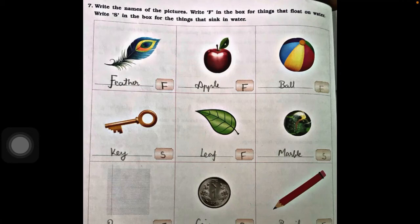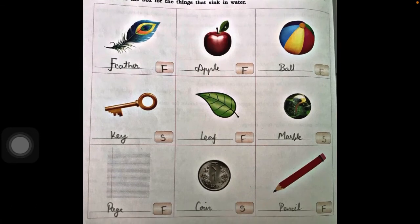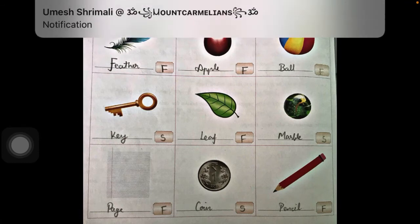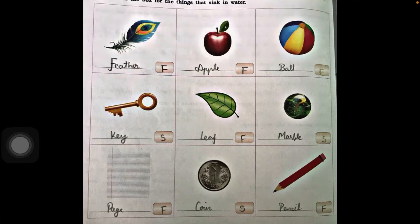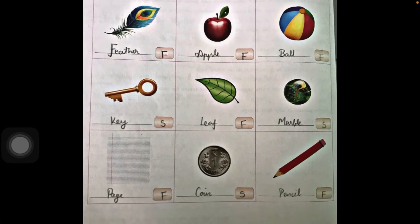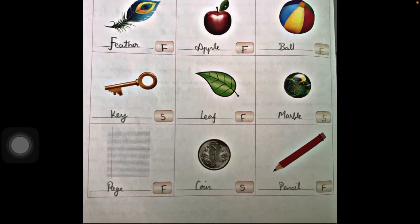Leaf floats on water, so F. Marble easily sinks in water, so we write S. Now vase — vase can easily float on water, so we write F. Coin easily sinks in water, so we write S. Finally, pencil can float on water, so we write F.